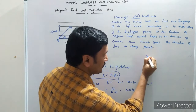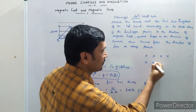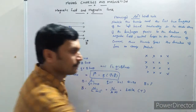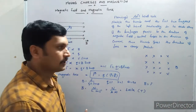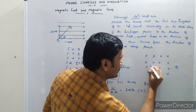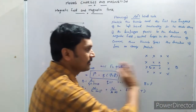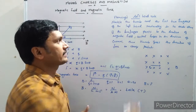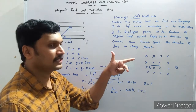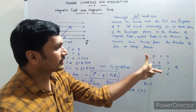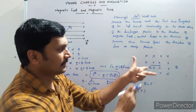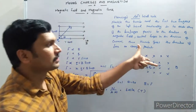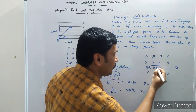For example, suppose we have a uniform magnetic field perpendicular to the plane of the board and directed inward (shown by cross marks). A positive charge Q is moving in this field perpendicular to the magnetic field. Applying Fleming's left hand rule — forefinger in the direction of magnetic field, middle finger in the direction of current (same as positive charge motion) — the thumb points upward. So this positive charge experiences a force in the upward direction and deflects upward.